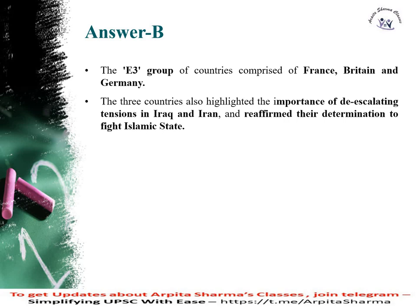The answer here is B. The E3 group of countries includes France, Britain and Germany. The three countries have highlighted that it is important to de-escalate the tensions between Iran and Iraq, with the objective of reducing tensions and demonstrating their determination to resolve the conflict.